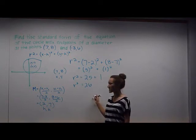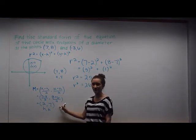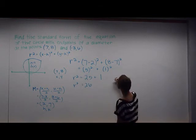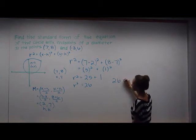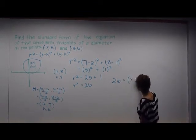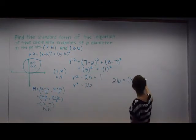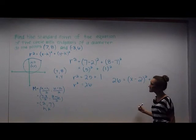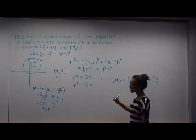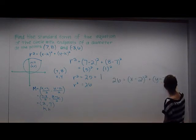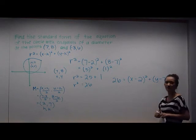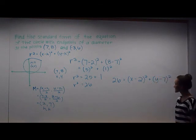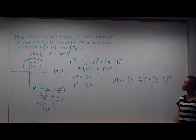Now that you've found the radius squared, you're going to take the midpoint of the circle that you found, (h,k), and plug it into the original equation with the 26 = r² that you just found. So 26 = (x-2)² + (y-7)². The standard form of the circle with endpoints of a diameter at the points (7,8) and (-3,6) is 26 = (x-2)² + (y-7)².